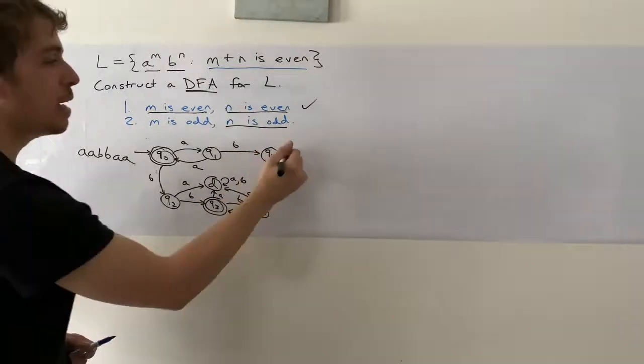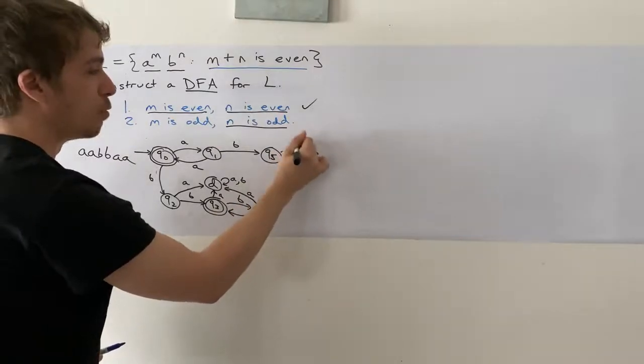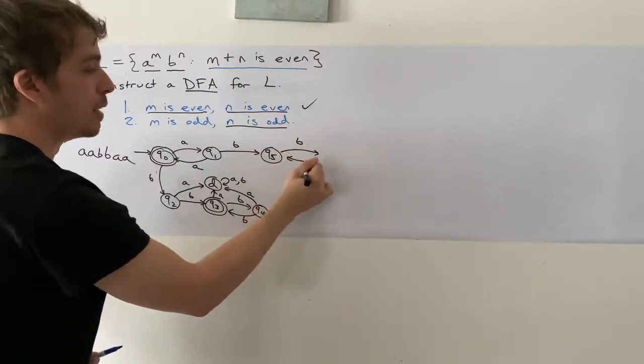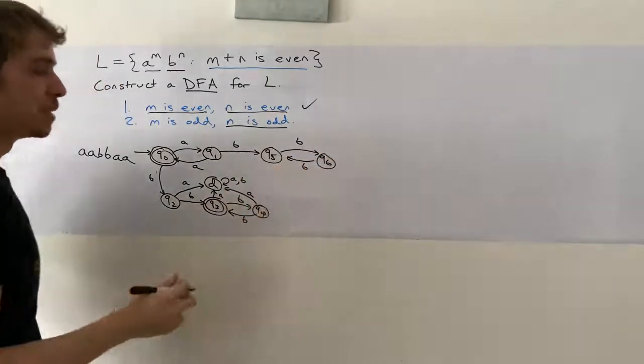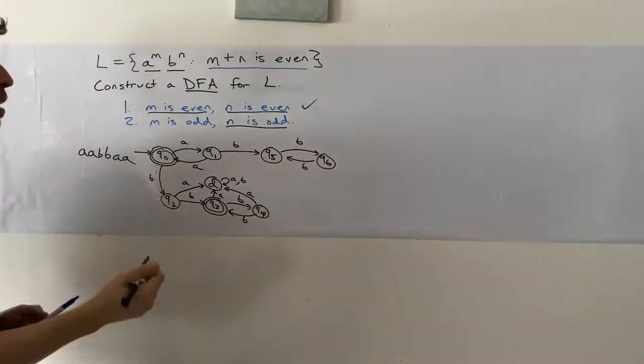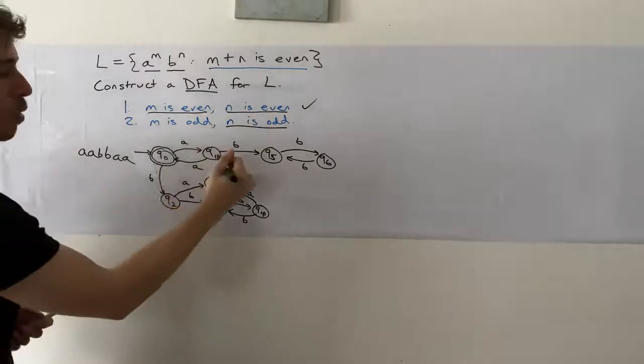We're going to have one B to a state called Q5. And here we're going to oscillate between two states with B's. And when is an odd number of B's? Well, let's see. So in Q1, we have zero B's so far. Q5, we have one B.